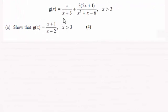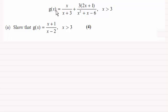Hi there. Now for this question we're given the sum of these two algebraic fractions g of x and asked to show that it reduces down to x plus 1 over x minus 2 for x greater than 3.